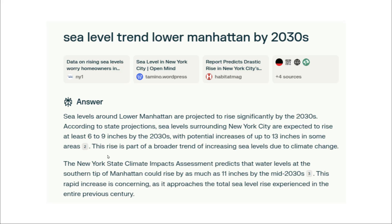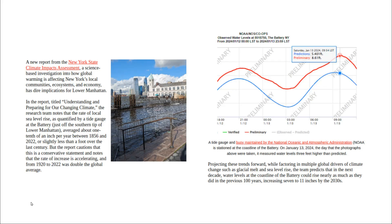I asked Perplexity.ai about rising sea levels in Manhattan. It said that sea level is expected to rise there by at least 6 to 9 inches by the 2030s, and it is concerning. One year ago, the New York State Climate Impacts Assessment said that the situation was dire for Lower Manhattan. This article showed a photograph from January 13, 2024, and said sea level could rise 11 inches by the 2030s.